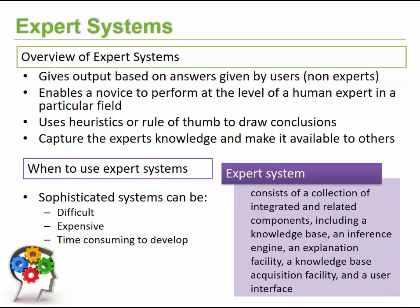It's going to make use of heuristics or rules of thumb in order to draw conclusions, and it captures the knowledge of experts and makes it available to other people or non-experts. When do we typically use expert systems? Whenever we want to capture the knowledge of an expert. The expert system consists of a collection of integrated and related components including the knowledge base, an inference engine, an explanation facility, a knowledge base acquisition facility, as well as a user interface.